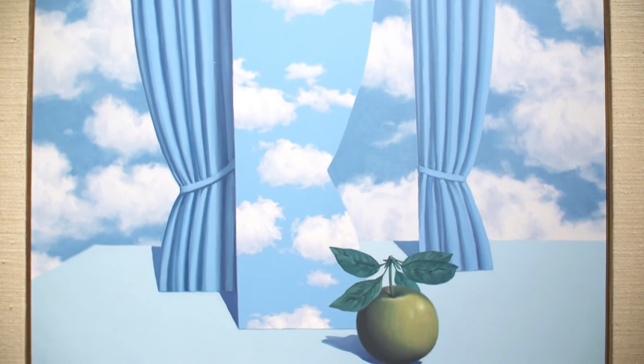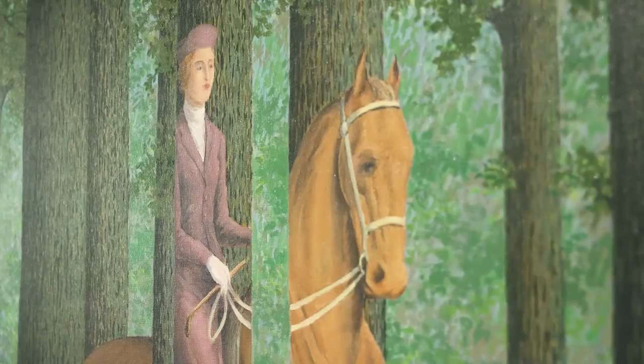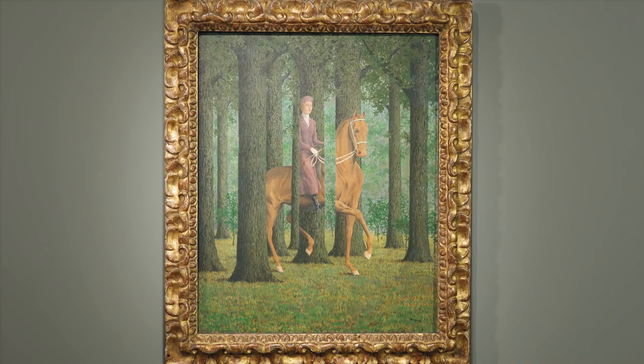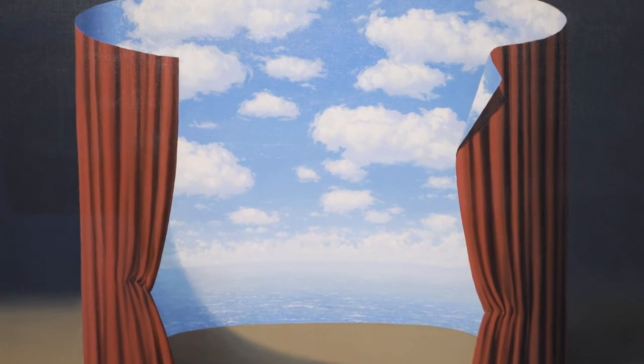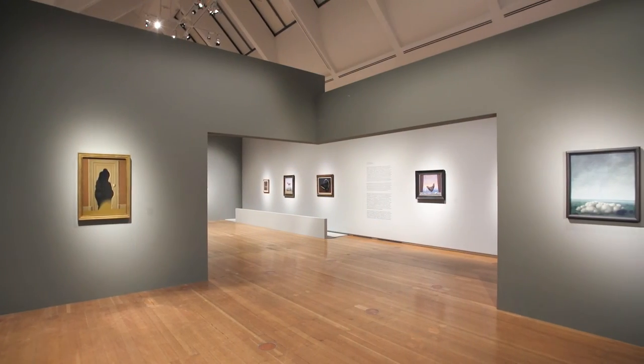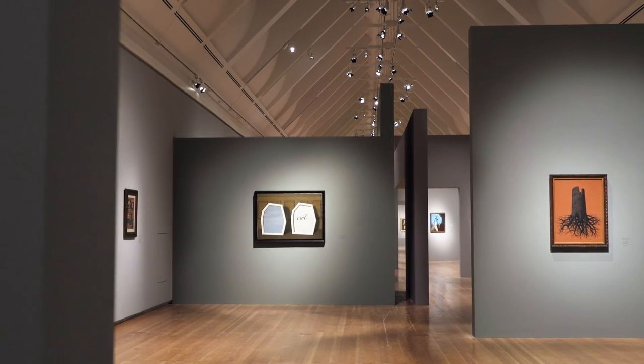René Magritte's motifs are highly symbolic, like the apple or the curtain. They allude to psychology, philosophy, or ancient myths. He repeatedly combines his motifs in new ways, puts them in different contexts. The result is his very own enigmatic cosmos.